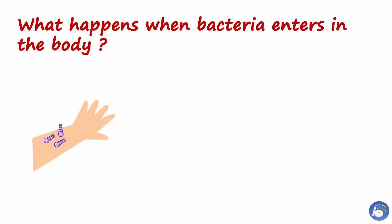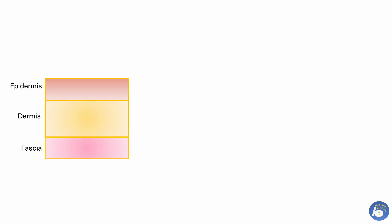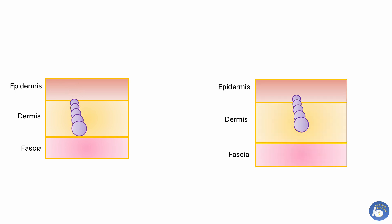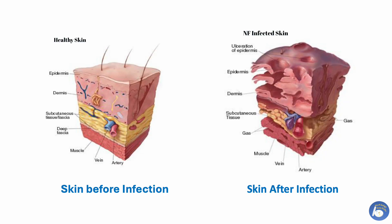When bacteria get the opportunity they enter via a skin opening, go deeper, and reach the fascial layer of skin. Once bacteria reach the fascial layer, they release toxins that damage nerves, muscles, and soft tissues present under the fascial layer — thus it is called flesh-eating disease. The diagram of skin layers before and after infection shows how damaging bacterial toxins can be, destroying all layers completely including tissues, muscles, and nerves.